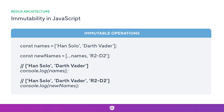Moving on to the array example: we have const names with two strings. We can say const newNames as a new array using dot dot dot names to spread the existing array in, giving us a new array with both values. We then add 'R2D2' as another value. Console logging shows names still has Han Solo and Darth Vader, while newNames has all three. When removing items from an array, instead of using splice we can create a new array removing items with the filter operator — this is thinking in an immutable way.